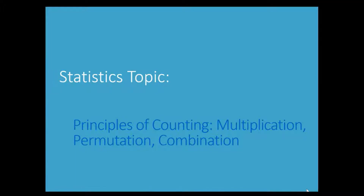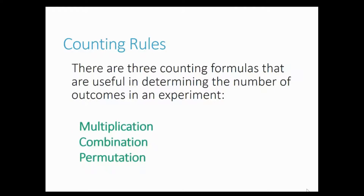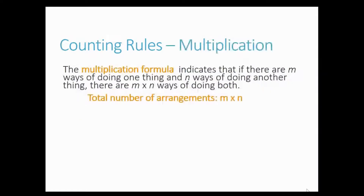Welcome to the statistics session on the topic of principles of counting: multiplication, permutation, and combination. There are three counting formulas useful in determining the number of outcomes in an experiment. The multiplication formula indicates that if there are m ways of doing one thing and n ways of doing another thing, then there are m times n ways of doing both.